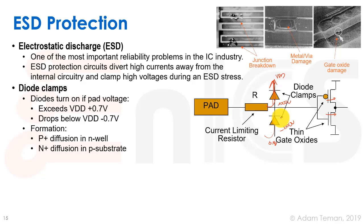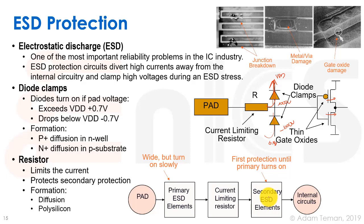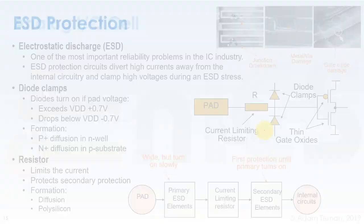Usually ESD protection is done in two stages: a primary ESD using large diodes — which take longer to turn on — and a secondary ESD with smaller, faster diodes that provide protection during the short time before the primary ESD can handle the current. After the current-limiting resistor, the secondary ESD element responds quickly for initial protection. The diodes are made with P-diffusions in N-wells or N-diffusions in P-substrate, and the resistors are made from either diffusion or polysilicon.